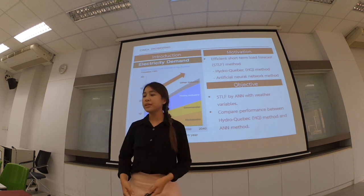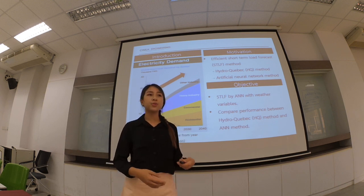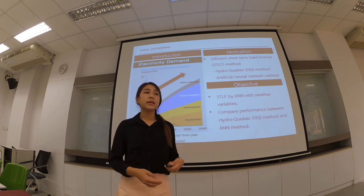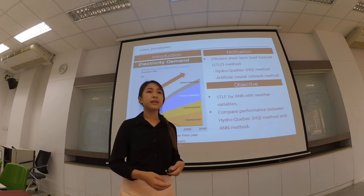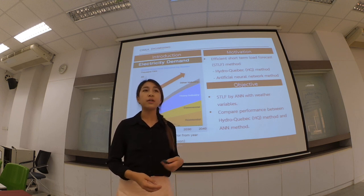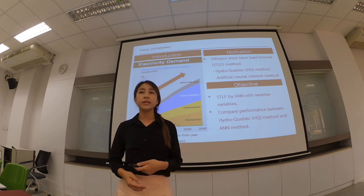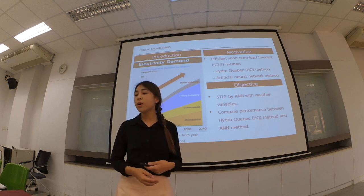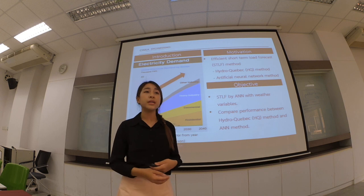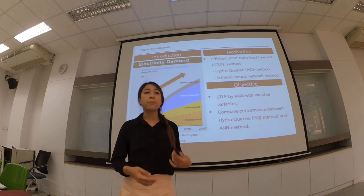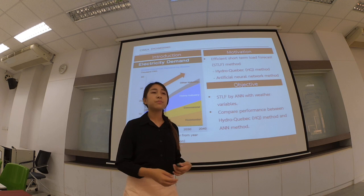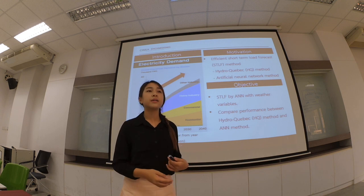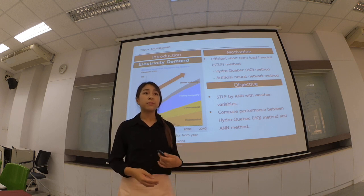The objective of this paper is: one, short-term load forecasting using the artificial neural network with weather variables as the ANN input; and two, to compare the performance between the ANN method and the hydroelectric system method.